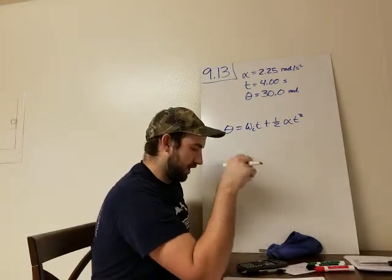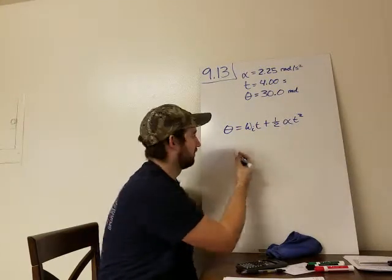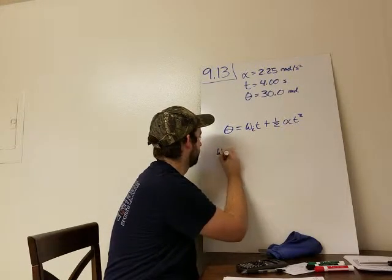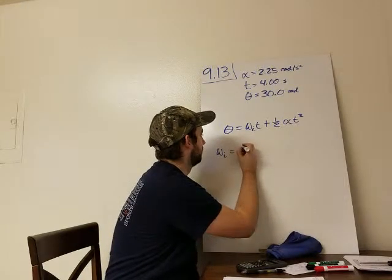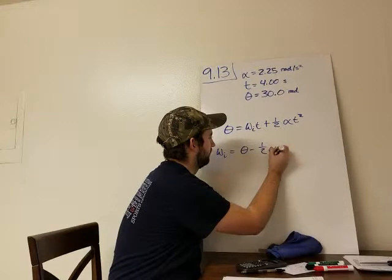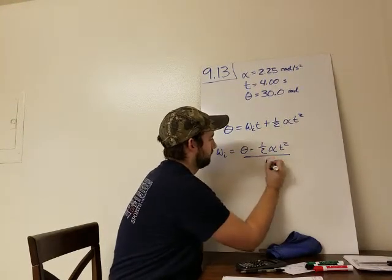So to do that, we need to isolate that. And so we're going to end up with that equaling theta minus one-half alpha t squared, all over t.